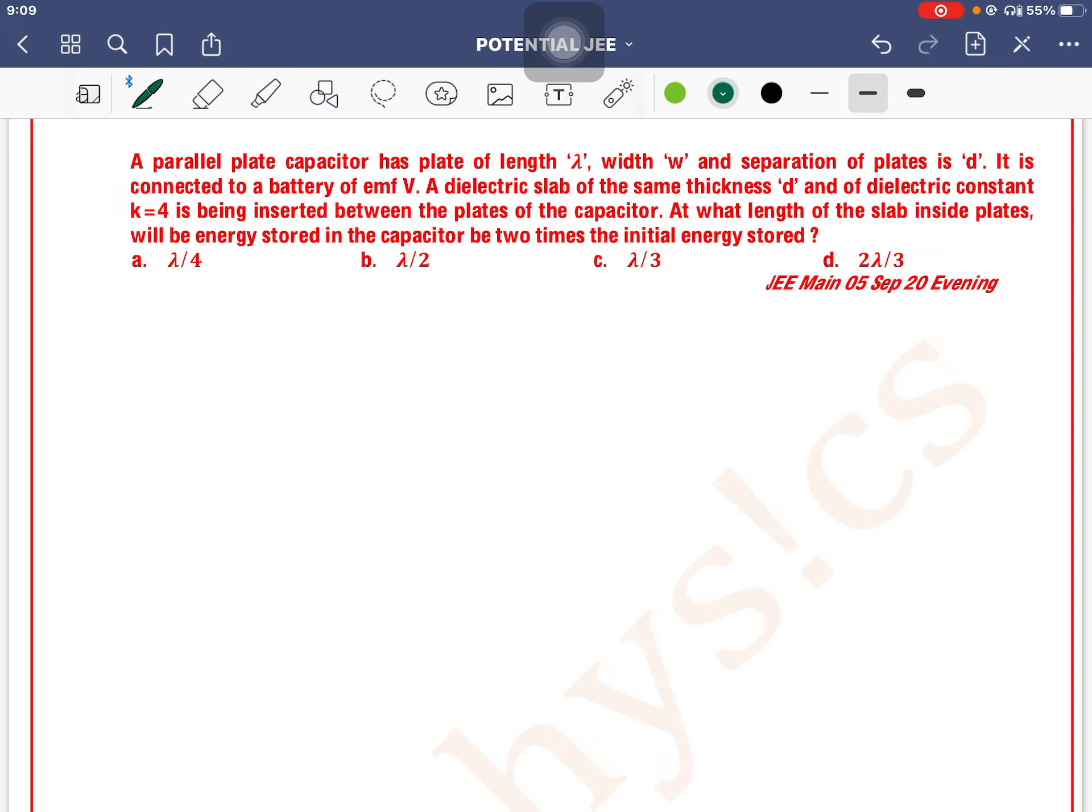A parallel plate capacitor has plates of length lambda, width W, and separation D. It is connected to a battery of EMF V. The area is length times width, lambda times W. The separation between the plates is D, and by default, we use air inside. It is connected to a battery with voltage V.